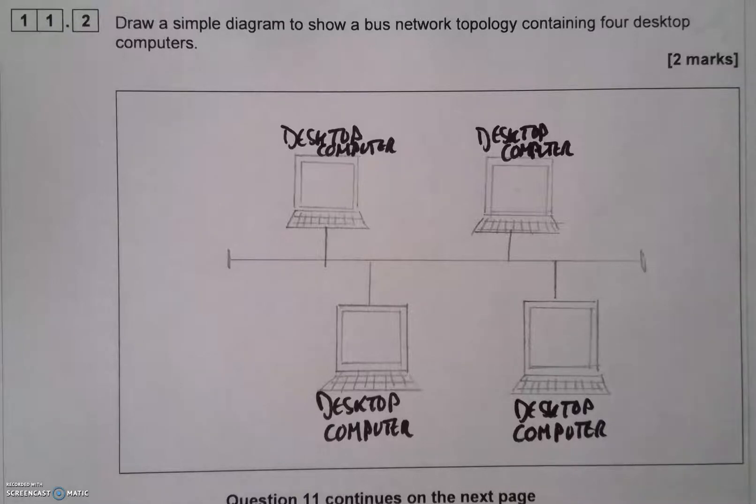The bus topology looks like this. It's just literally a backbone with computers connected to it. There may not be a hub, there may not be a server, it's just a very simple network and that's one of its advantages. It's so simple and it's relatively inexpensive to create. And that is your bus network.